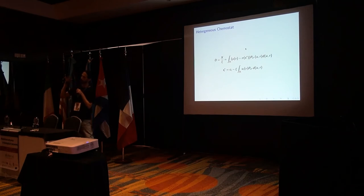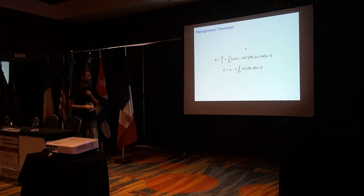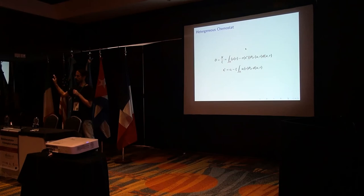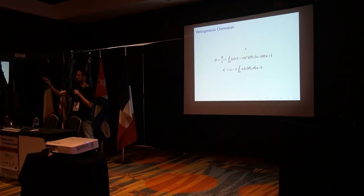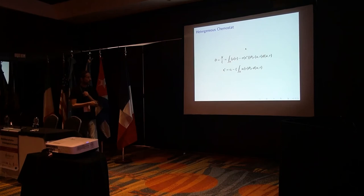But you have also a second problem, which is what we call the inverse problem. In which I give you the D — the dilution rate — and that's the only thing I give to you. And I give you also the stoichiometric matrix. And then I ask you: try to predict which are the fluxes inside the system, because this P here determines how the fluxes distribute within the system.